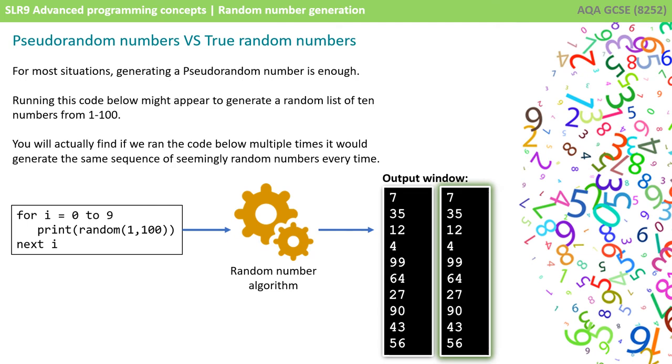You'd actually find though, that if we ran that code multiple times, it would generate the exact same sequence of seemingly random numbers every time. So it's clearly following some pattern, and these so-called random numbers could be predicted.